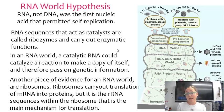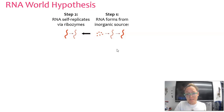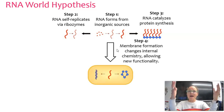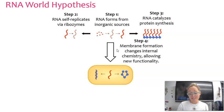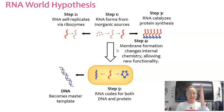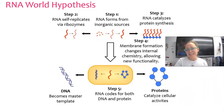If we look at this picture here, step one: RNA forms from inorganic sources. Step two: RNA self-replicates via ribozymes. Step three: RNA catalyzes protein synthesis with rRNA, mRNA, tRNA. Step four: membrane formation changes the internal chemistry, allowing new functionality. Step five: RNA codes for both DNA and protein. We've seen this in retroviruses where RNA can actually be used to produce DNA, and if we have the RNA, the RNA is also the code for proteins.